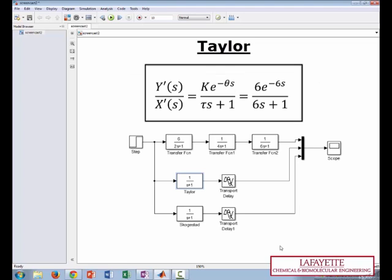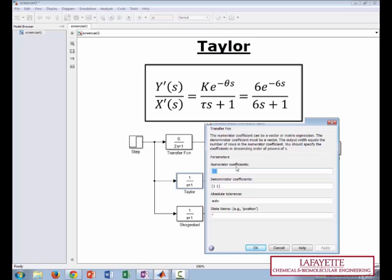Therefore, our Taylor approximation is 6 times e to the negative 6s over 6s plus 1. What this means for the Simulink model is that the transfer function will equal 6 divided by 6s plus 1.